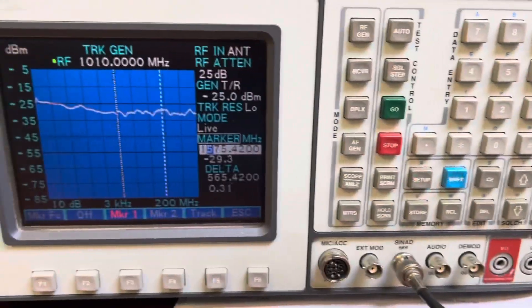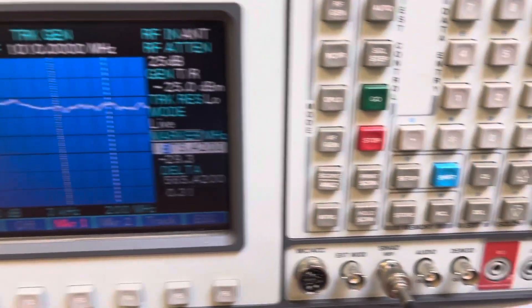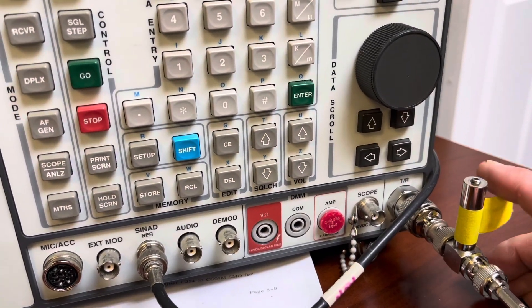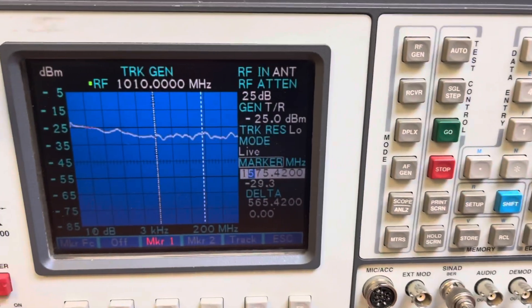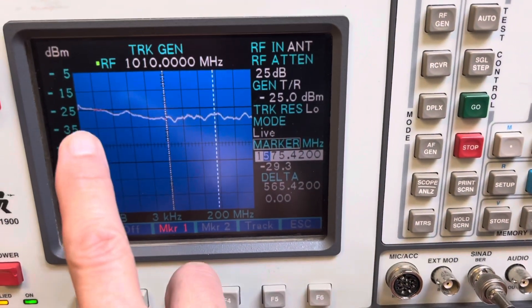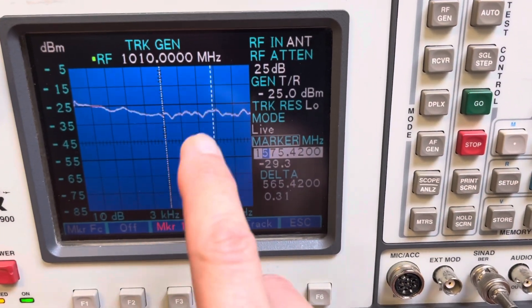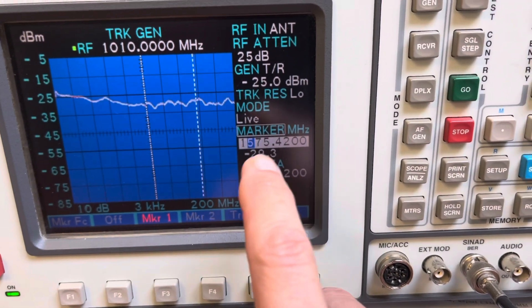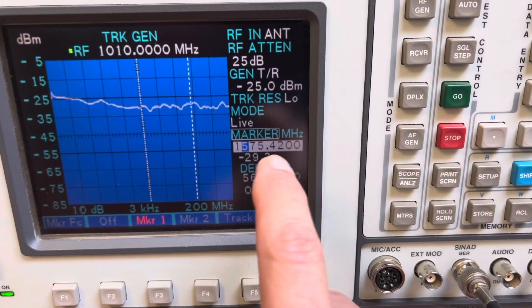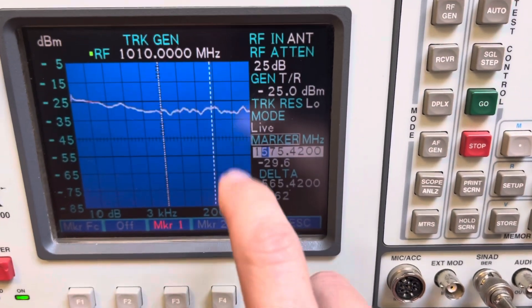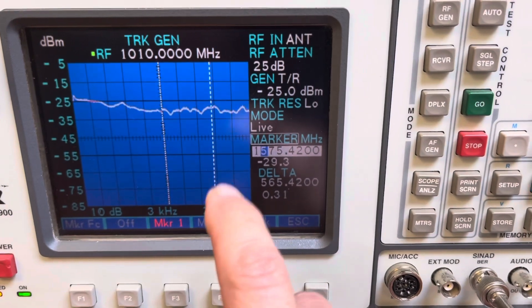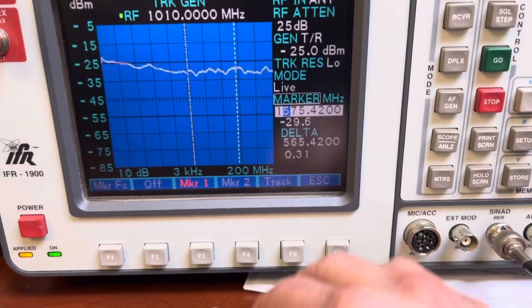Here we are back at the bench with the IFR-1900 and we've got the notch filter that was installed on this particular COM radio here on the tracking generator. You can see with the same test parameters, about 10 megahertz to 2 gigahertz, we're basically seeing a pretty flat response with no attenuation out here at 1.57542 gigahertz. So that is definitely our problem. We've got a spurious emission out of the COM that is not being suppressed by the notch filter like it should be.